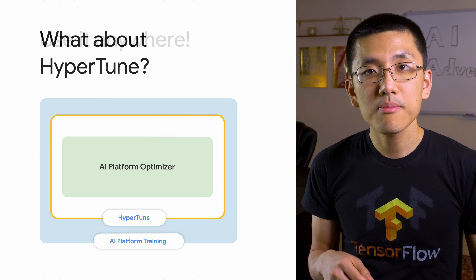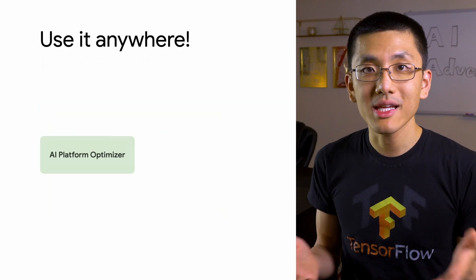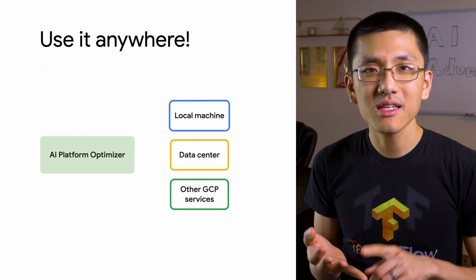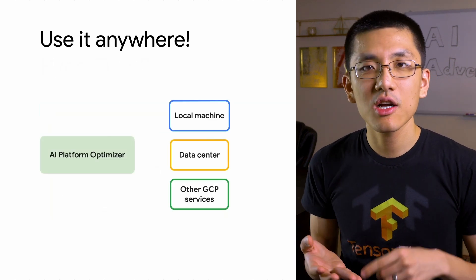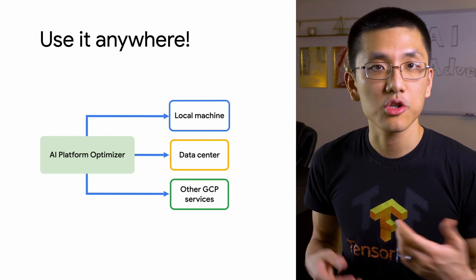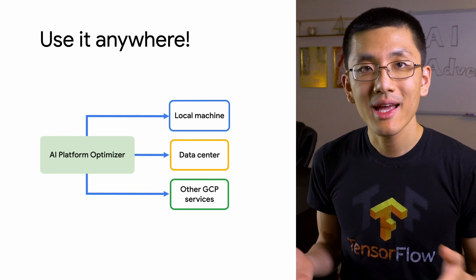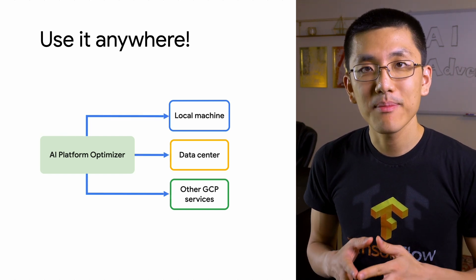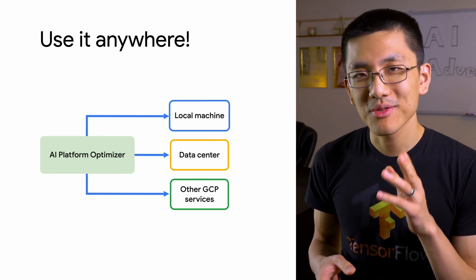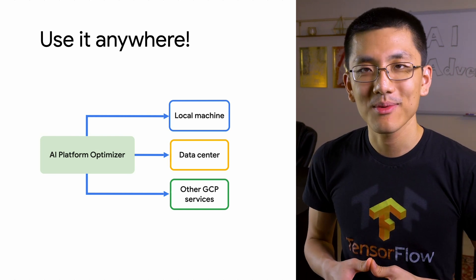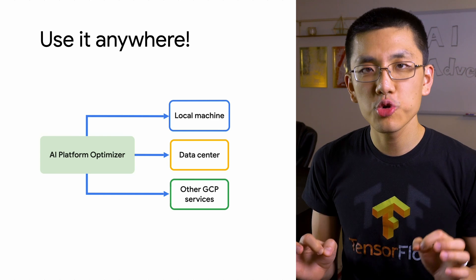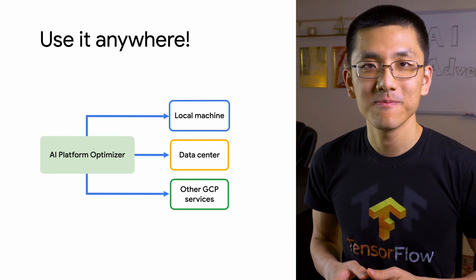This means that your model could be training anywhere — your local machine, a data center, or on another GCP service like Compute Engine or Kubernetes Engine. Anything that can make a REST API call can use AI Platform Optimizer, and that flexibility is its true power.